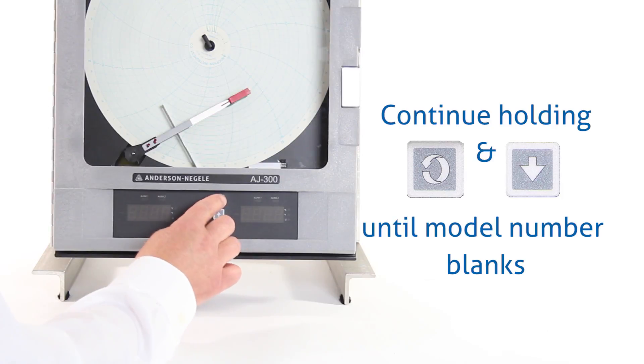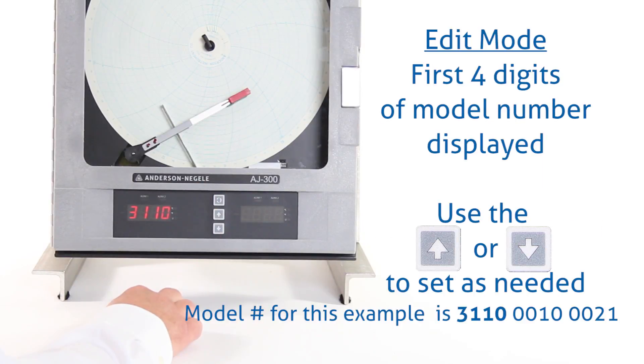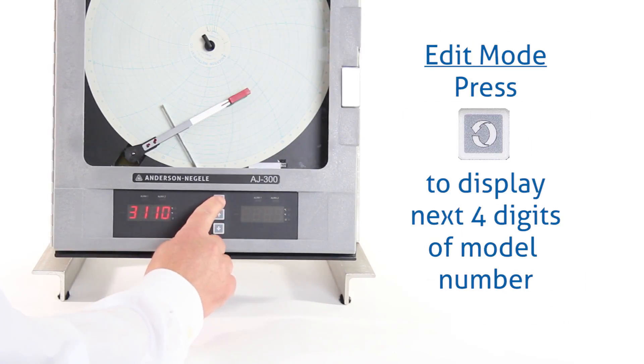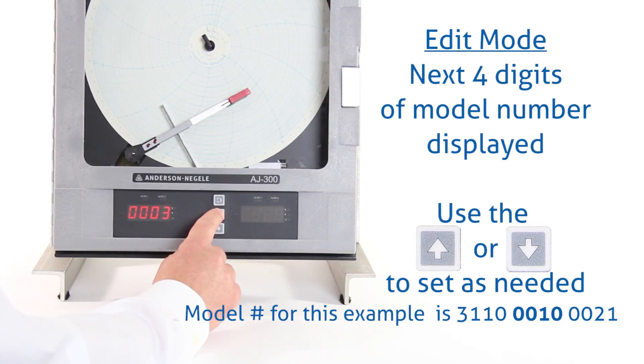So I'm going to power up the recorder while holding the scroll and the down key. There's the first four digits. When it goes blank, I'm going to release the keys and we should see those four digits come back. Now we're in edit mode. So my first four digits are 3110. That is correct for my model number. To get to the next set of four digits, I press the scroll key and now I have the next set and I need these to be 0010. So I just press the up arrow key repeatedly until I get the digits to match my model number.